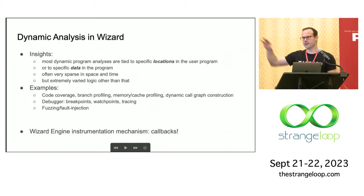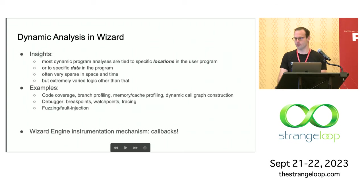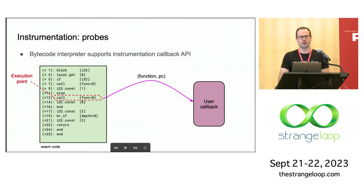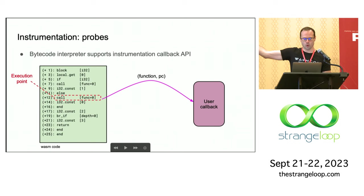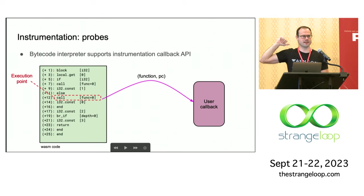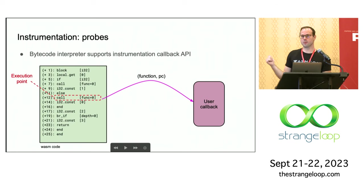This all boils down to one thing in Wizard: callbacks. It's not rocket science — it's just callbacks. Wizard has an interpreter for WebAssembly. There's a block of WebAssembly code, and there may be some point that's interesting to us as an analyzer. What we really want is to add some logic — just a callback that happens whenever this point is executed.